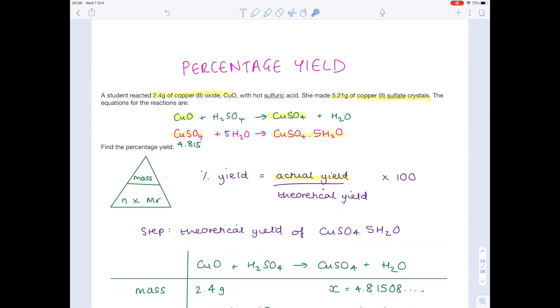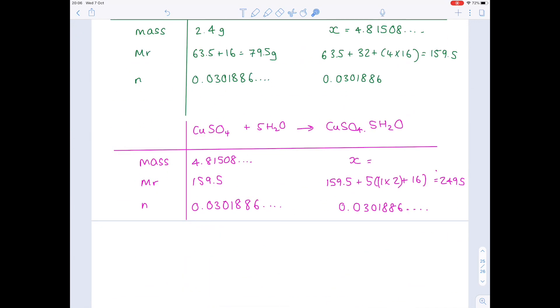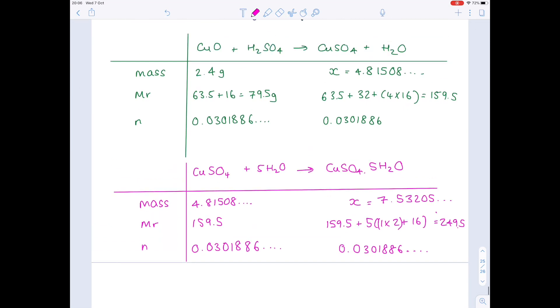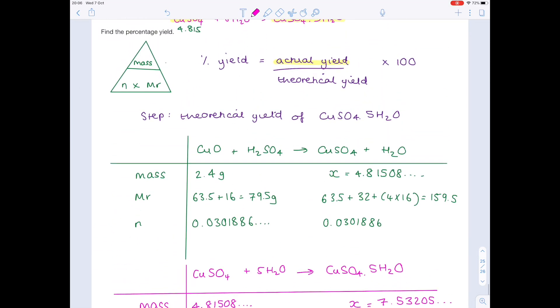And then your final step is to find x. Remember that mass is number of moles times Mr, so do 249.5 times 0.0301886 to get a theoretical yield of 7.53205. And now we're ready to use our original equation, the percentage yield equation up here, because we have our actual yield and now we have our theoretical yield.